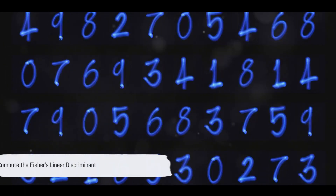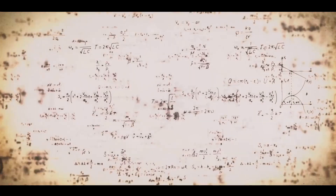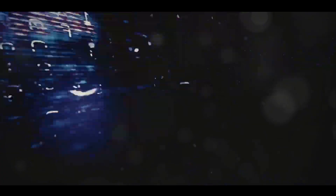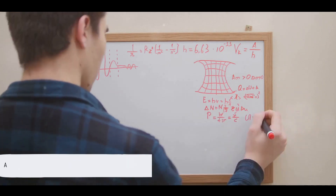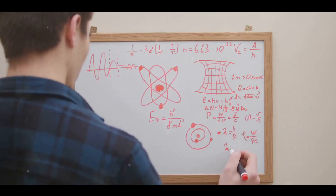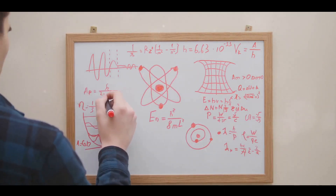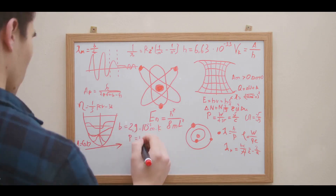Finally, calculate Fisher's Linear Discriminant — this is where the magic happens. The formula uses both the within-class scatter matrix and the between-class scatter matrix to find the best linear combination of features that separates the classes. And voilà, you now have a linear equation that can help you determine whether a new piece of fruit is an apple or an orange based on its size and color.